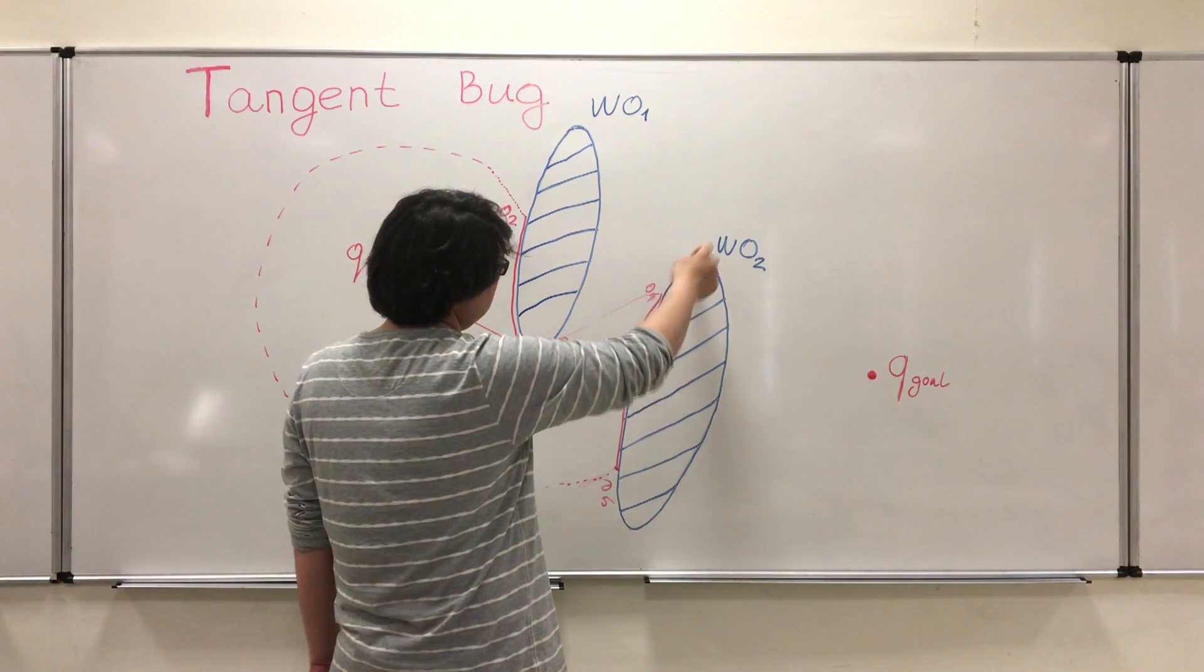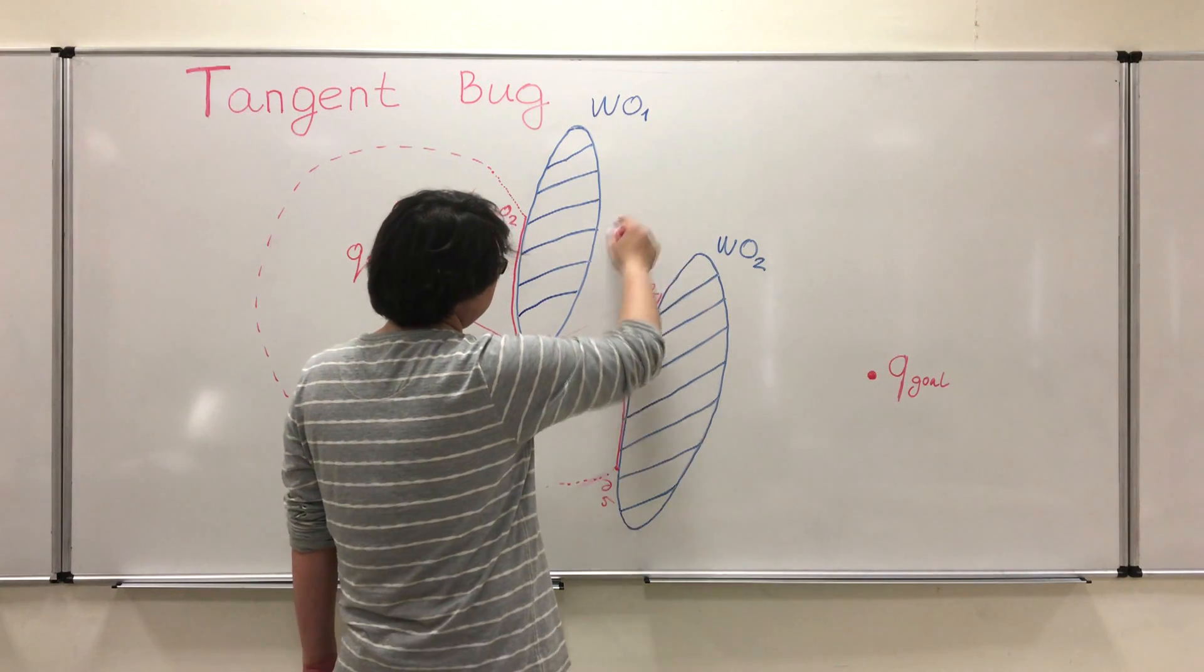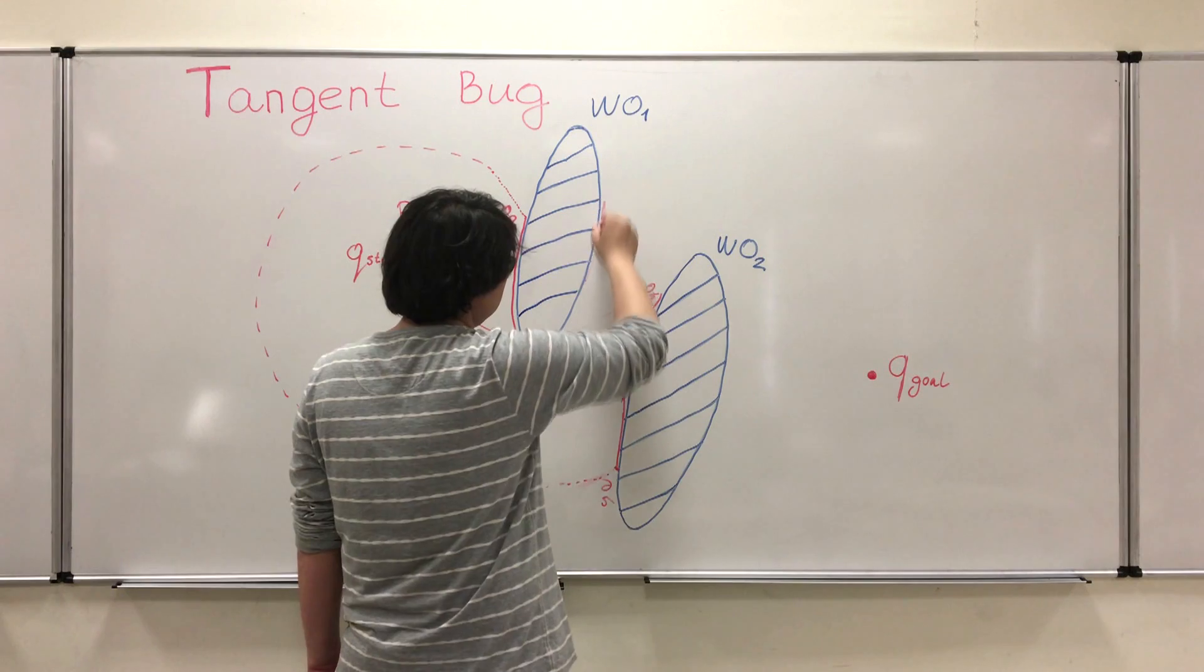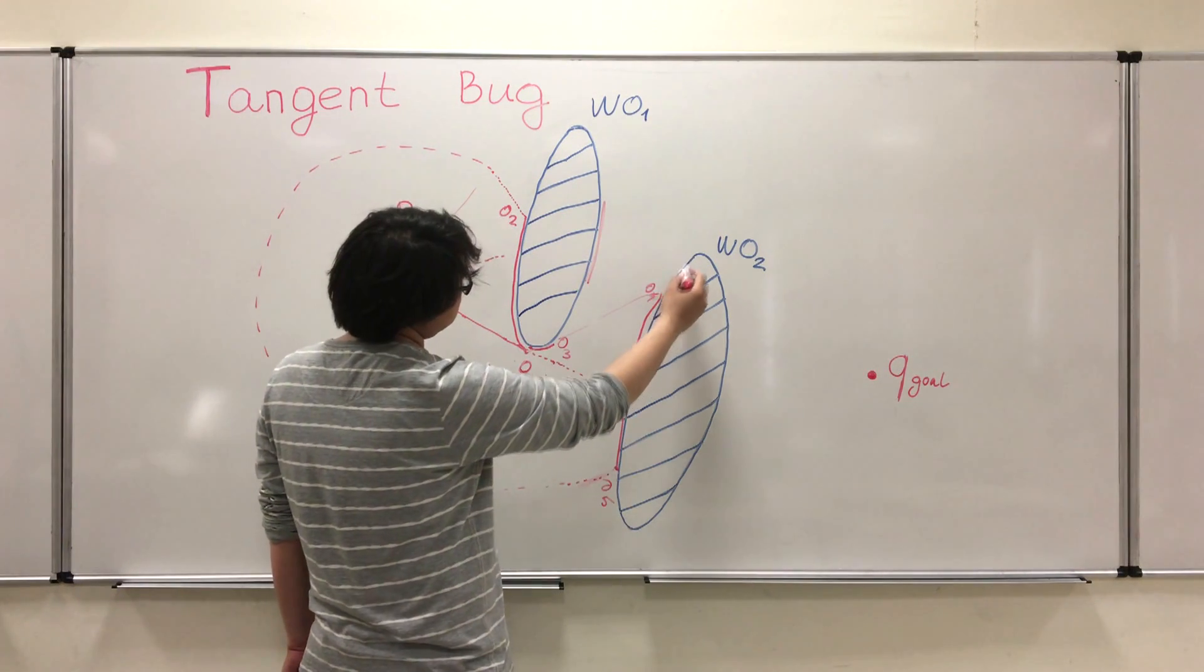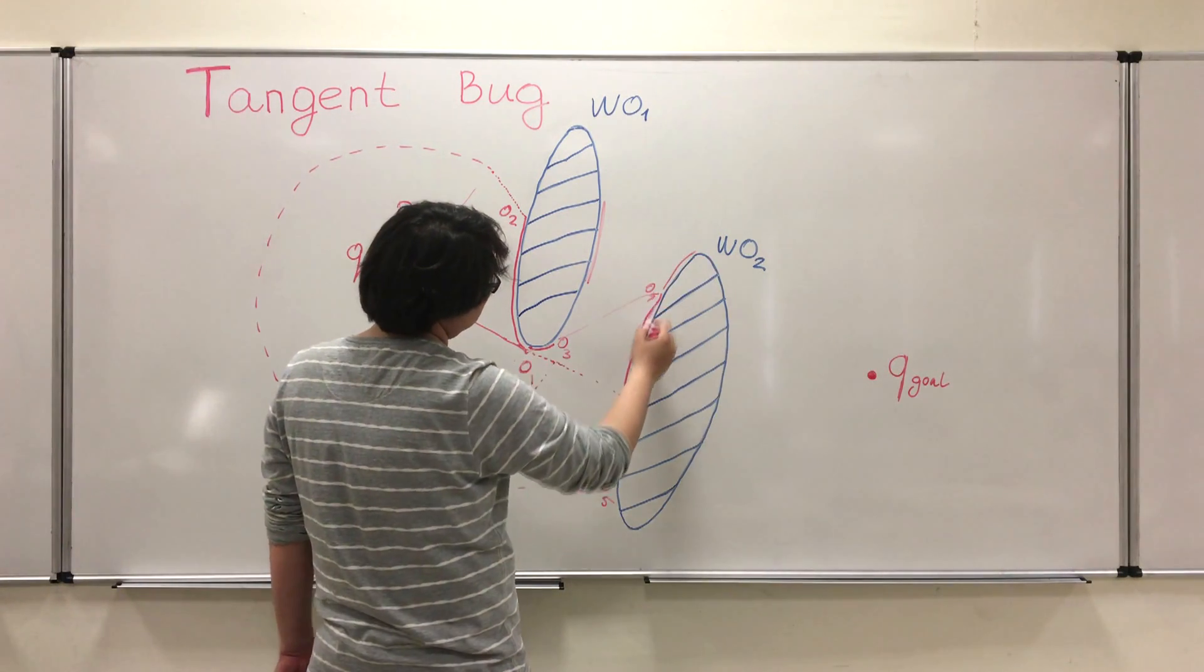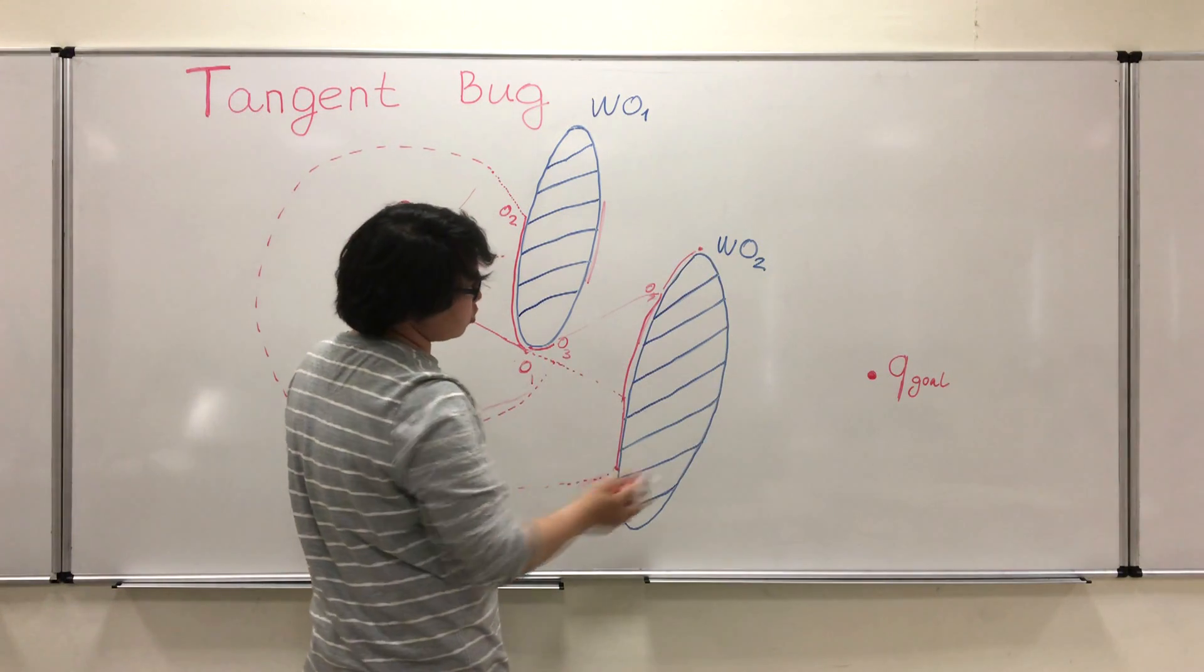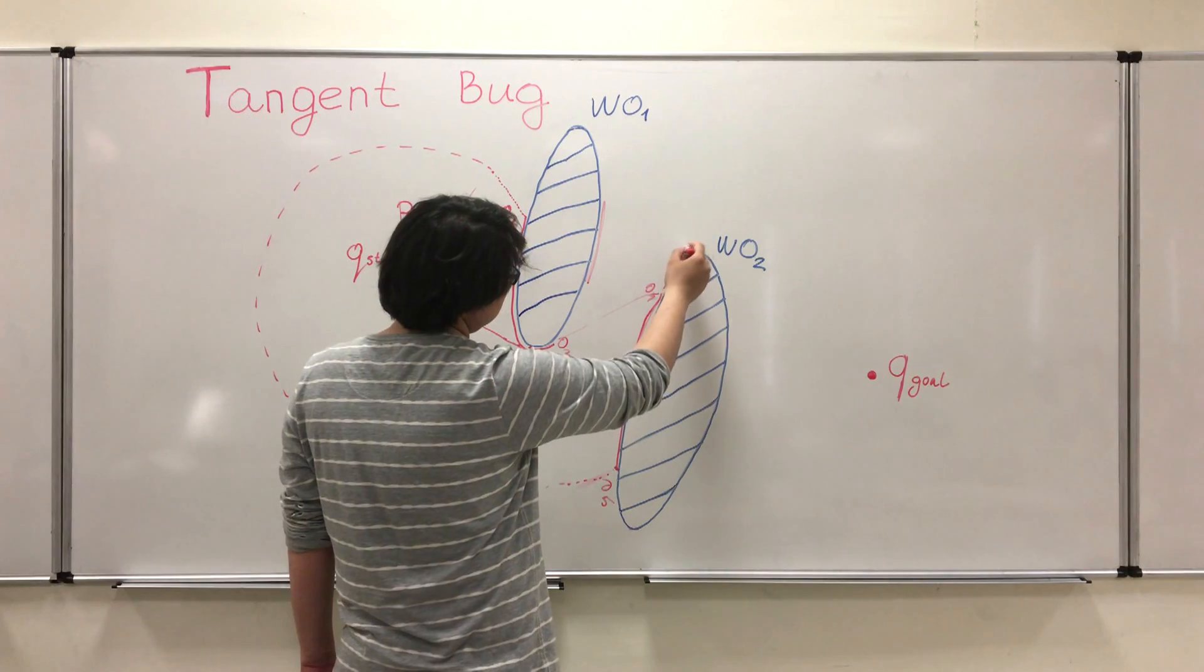After that one more time run our scanner. And we have discontinuities here, somewhere here, and here. And we see that this discontinuity is closest to the goal. And the robot goes here.